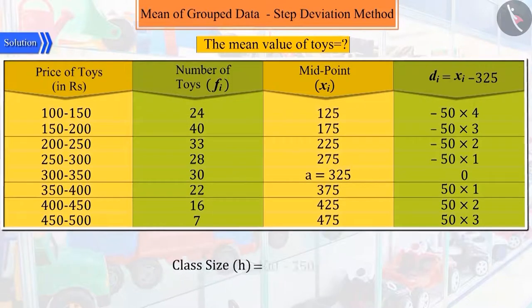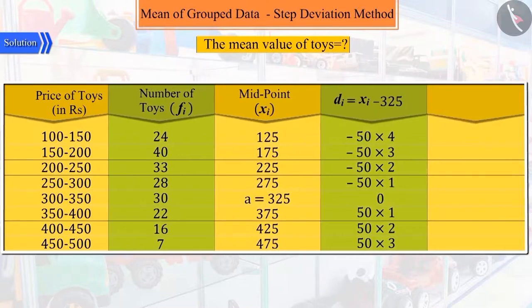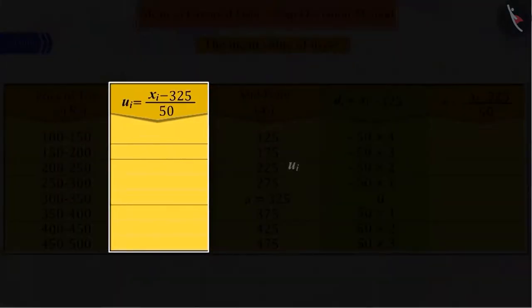Where 50 is the class size of each class interval, which we represent by small h. Suppose ui equals xi minus a by h, where a is the assumed mean and h is the class size.